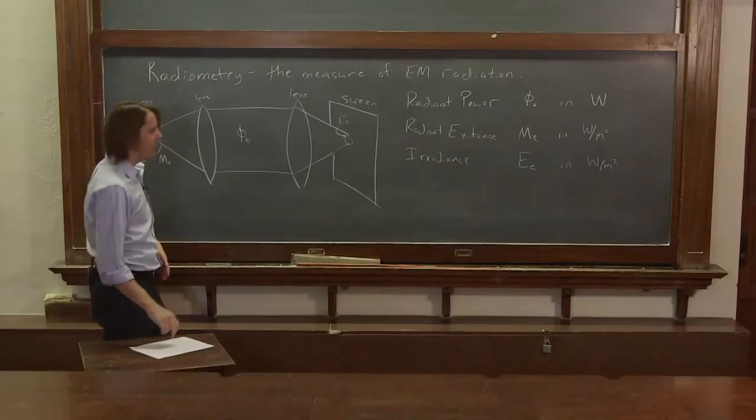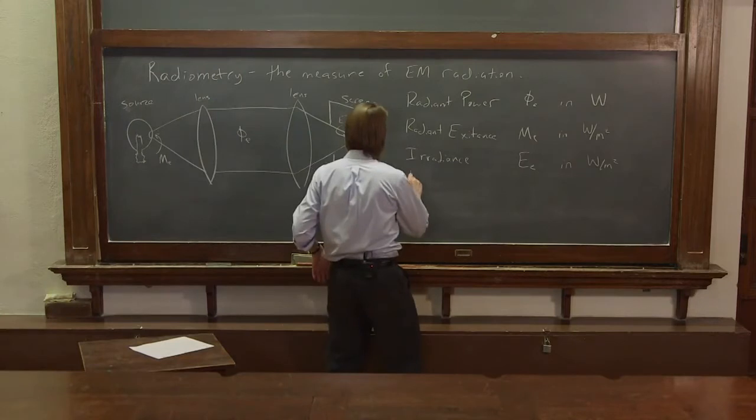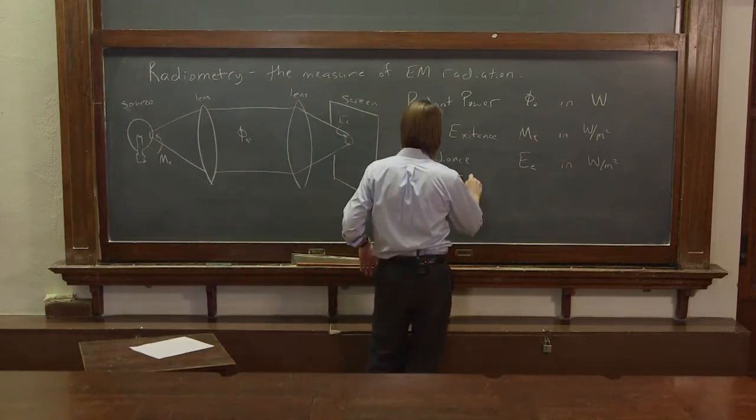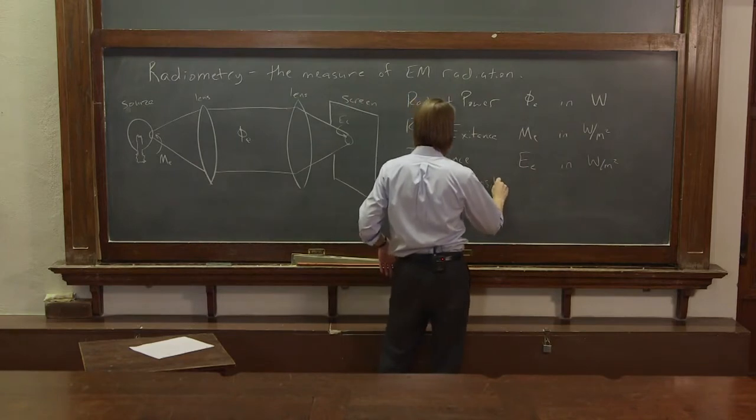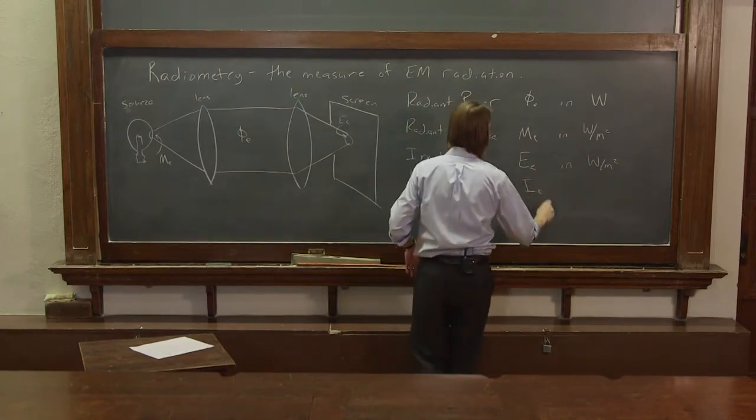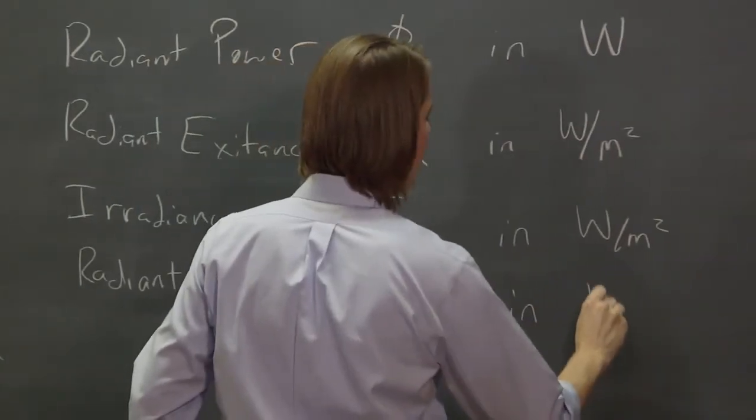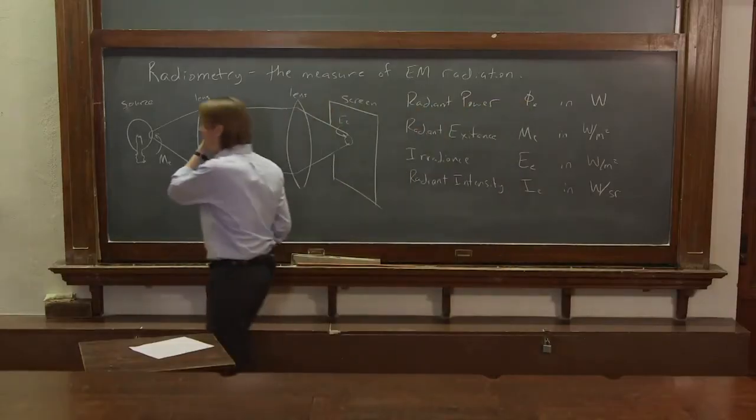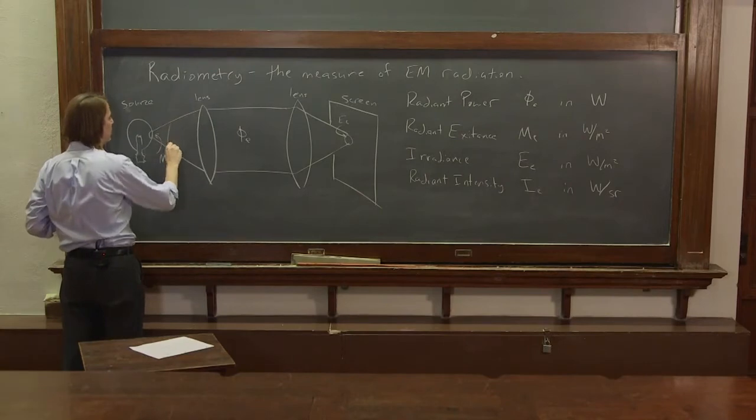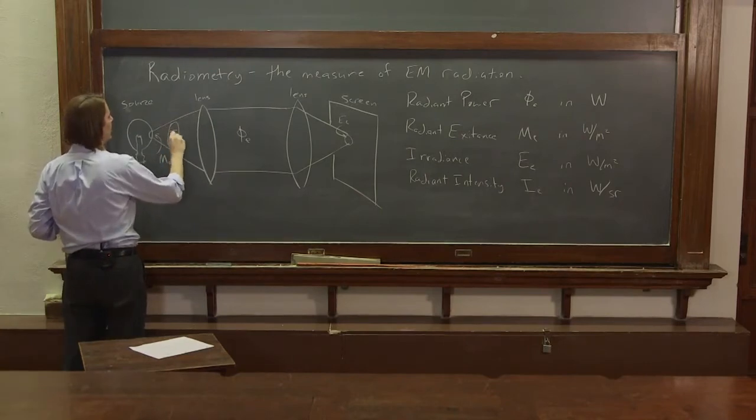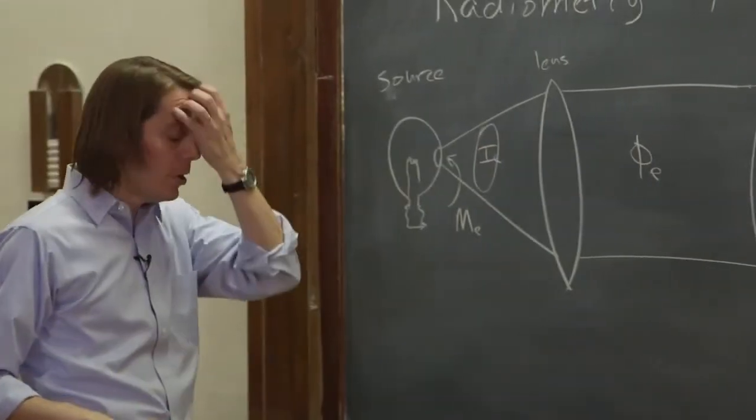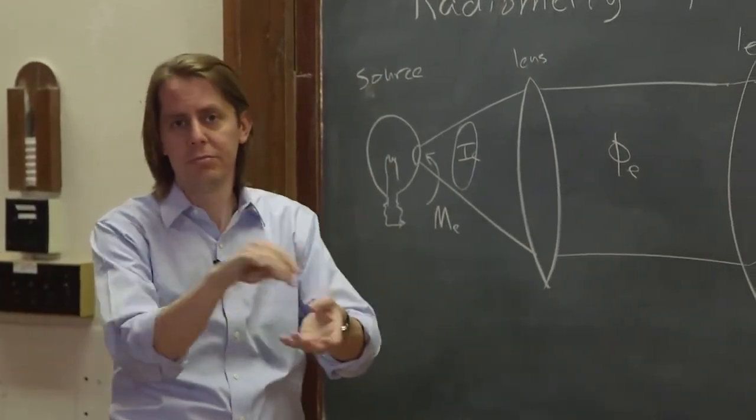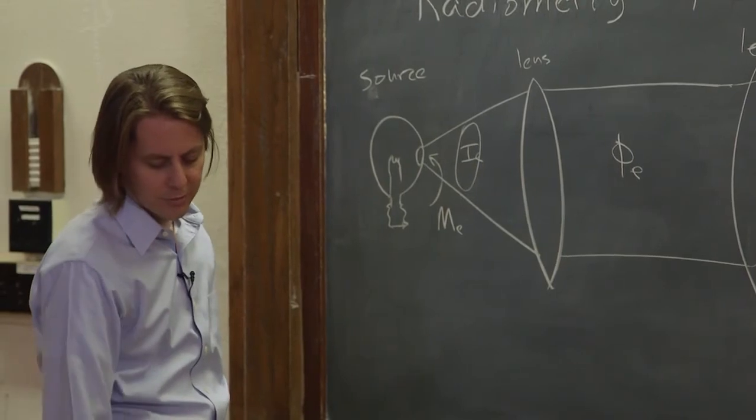Next, there is the radiant intensity, Ie, in watts per steradian. So if we think how many watts are coming out in this solid angle. So normal angles you think of in a plane in two-dimension, solid angle just means solid angle, steradians of solid angle.